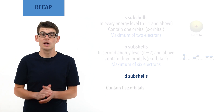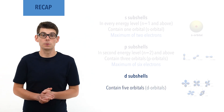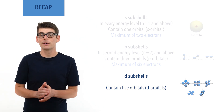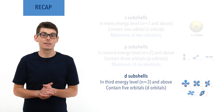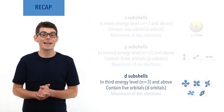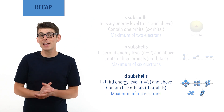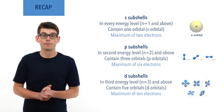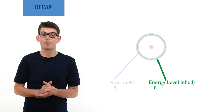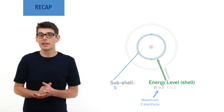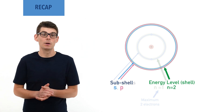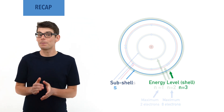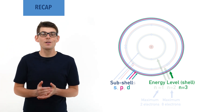D subshells contain five orbitals that have different shapes, called D orbitals. The five D orbitals are too big to fit into the first and second energy levels, meaning only the third energy level and above can contain a D subshell. A D subshell can hold a maximum of 10 electrons, two per D orbital. As different energy levels can fit different subshells, each can hold a different maximum number of electrons. The first energy level can only fit an S subshell and holds two electrons. The second can fit an S subshell and a P subshell, holding eight electrons. The third can fit an S subshell, a P subshell and a D subshell, giving a total of 18 electrons.